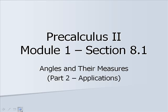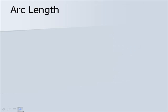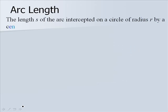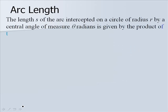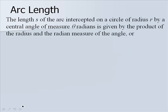Pre-Calculus 2, Module 1, Section 8.1: Angles and Their Measures, Part 2, Applications. The length s of the arc intercepted on a circle of radius r by a central angle of measure theta radians is given by the product of the radius and the radian measure of the angle, or s equals r theta.